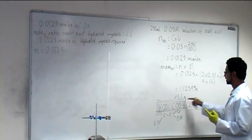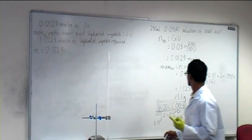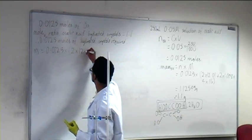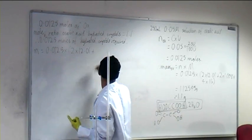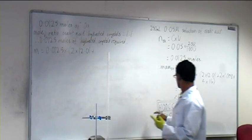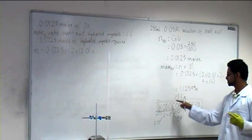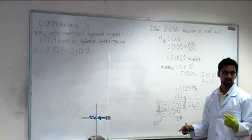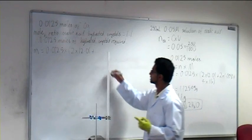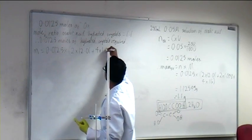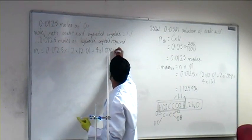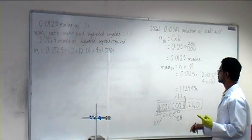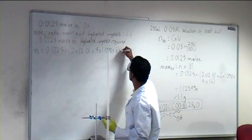Looking at the molar mass of the entire hydrated compound: 2 carbons, 2 hydrogens in the oxalic acid plus 4 hydrogens in the water, 4 oxygens in the acid and another 2 oxygens from the water — giving 6 oxygens total.